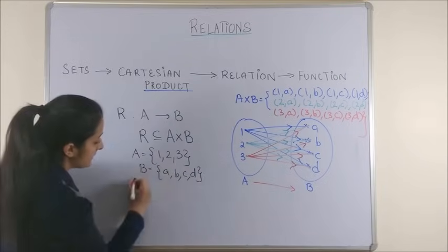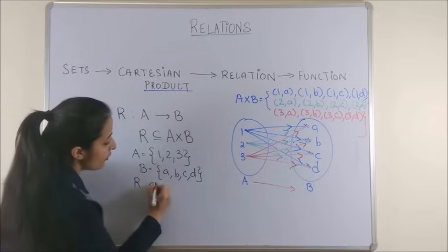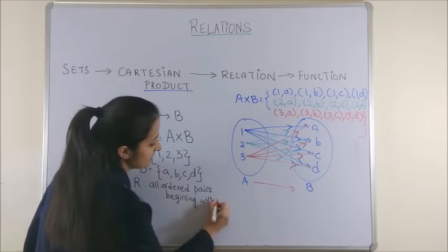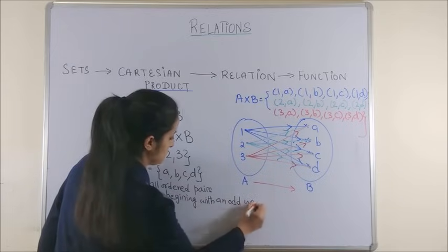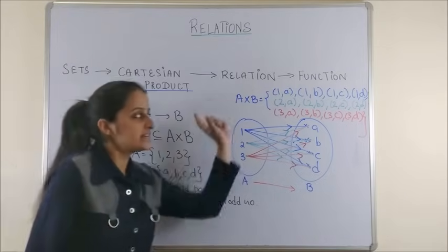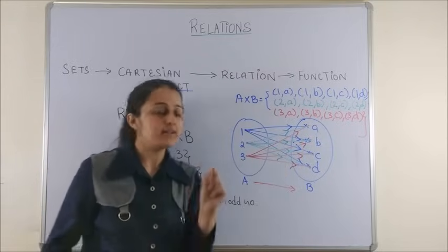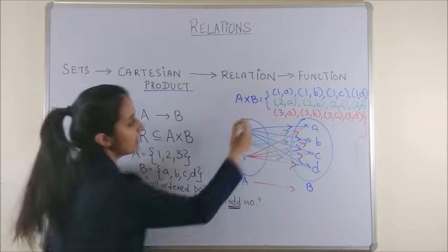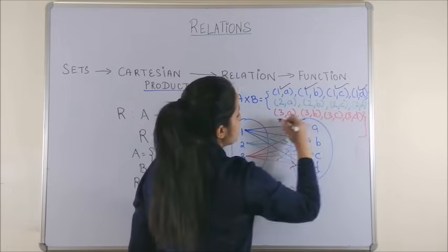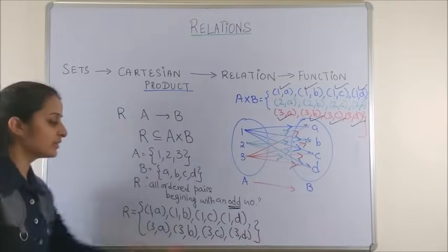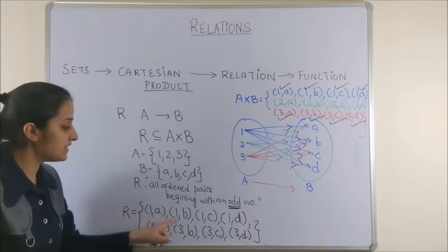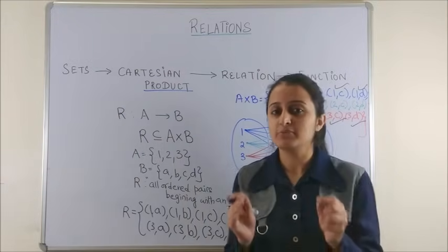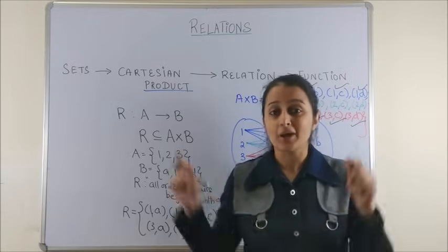So that means, we are not interested in the entire combinations that we get, but only as per this definition. So all ordered pairs beginning with an odd number would mean these specific ordered pairs. So this relation would give us this answer where the first elements are always beginning with an odd number. So that means, relation happens to be a part of the entire Cartesian product. Please have a look.